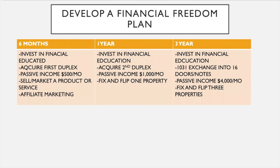I'm going to show you an example of a financial freedom plan — it's super basic. You can make this as complex or as simple as you want. A simple financial freedom plan looks something like this, and you can extend it out to as many years as you want. On the left you start with what you want to accomplish in the next six months, in the middle one year, and on the right three years.